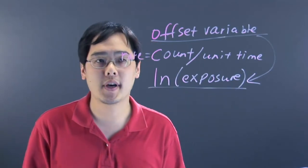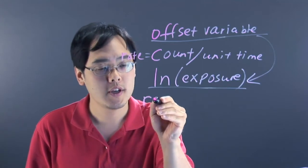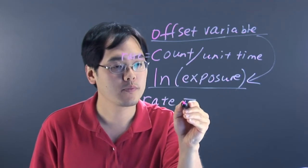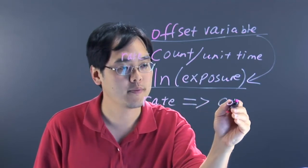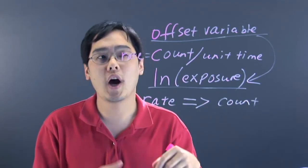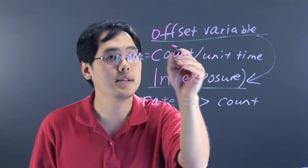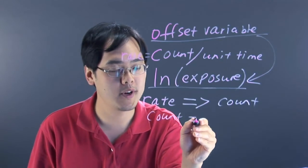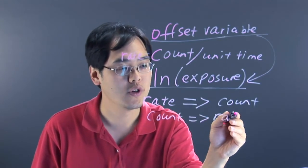What happens in Poisson models is you're taking the dependent variable and you're converting it from a rate to a count. But what an offset variable does is it can be used to take your count and convert it back to a rate.